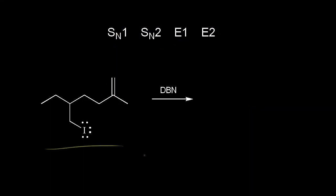For this primary alkyl halide, SN1 and E1 are out, so we only have to decide between SN2 and E2. We look at our reagent and we know that DBN is a strong base. Therefore, this is going to be an E2 reaction and not an SN2 reaction. The halogen is directly connected to the alpha carbon, and in the E2 mechanism, we're going to take a proton from a beta carbon — that's the beta carbon right here.